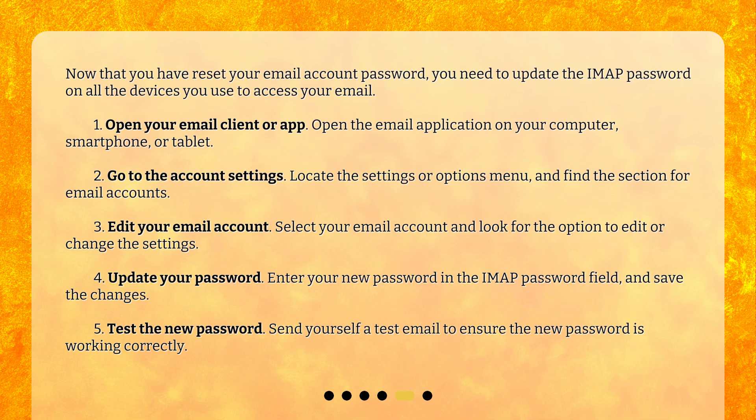Step 2: Go to the account settings. Locate the settings or options menu, and find the section for email accounts. Step 3: Edit your email account. Select your email account and look for the option to edit or change the settings. Step 4: Update your password. Enter your new password in the IMAP password field, and save the changes.